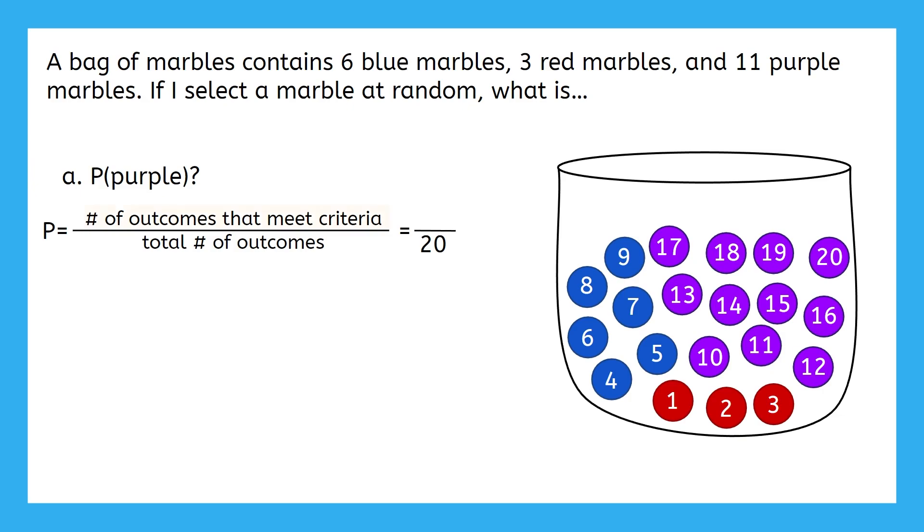Counting each marble helps us account for the fact that the chances are not the same of selecting the three colors, since there are different numbers of each. If there are 20 total possible outcomes, how many of them meet the criteria of being purple? Yeah, there are 11 purple marbles, so 11 outcomes meet the criteria of being a purple marble. So, here is our answer. The probability of selecting a purple marble at random is 11 out of 20, or 11 twentieths.